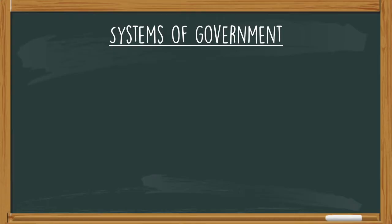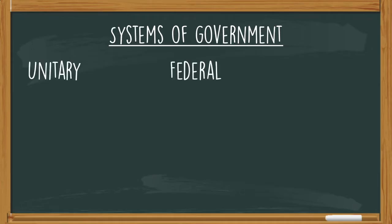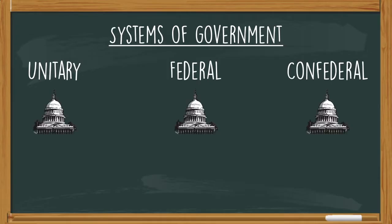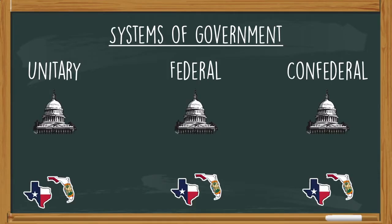Okay, so there you have it — a quick review of the three systems of government. We have the unitary system, the federal system, and the confederal system. And remember, we're talking about national central governments and regional governments and how they behave.